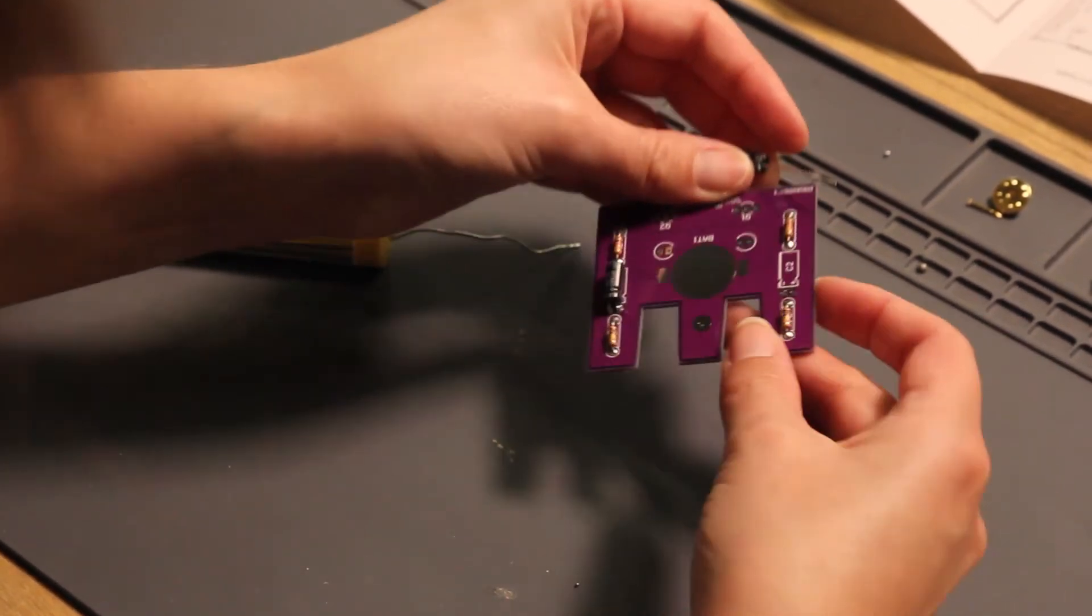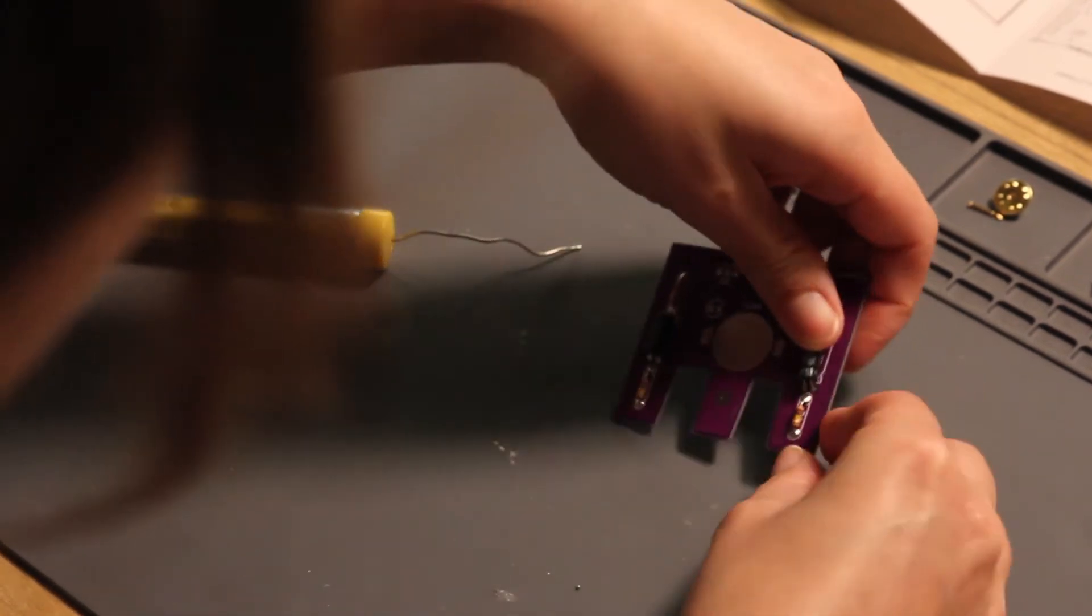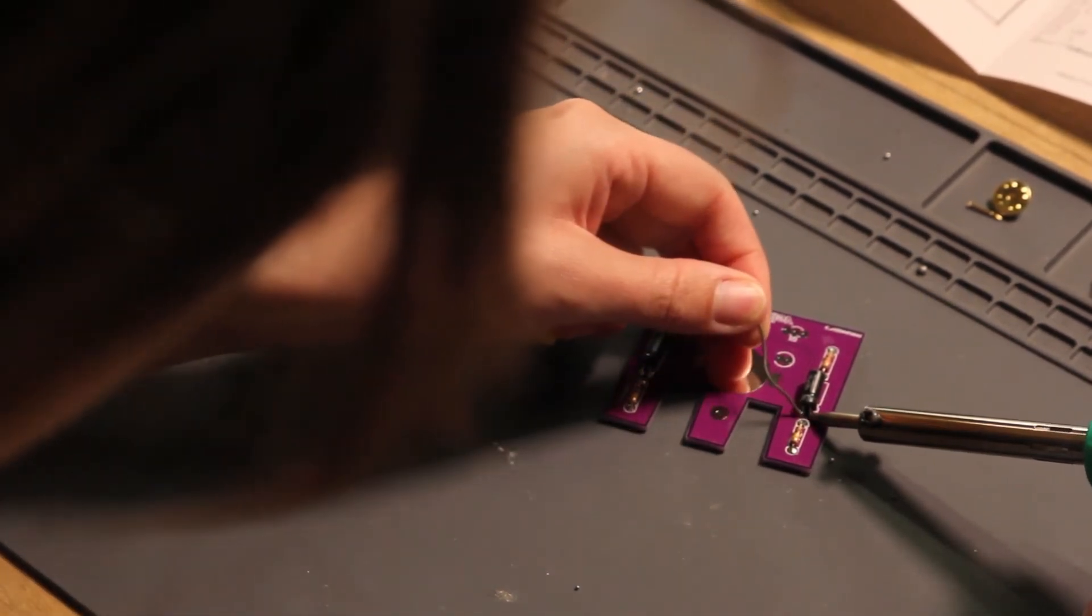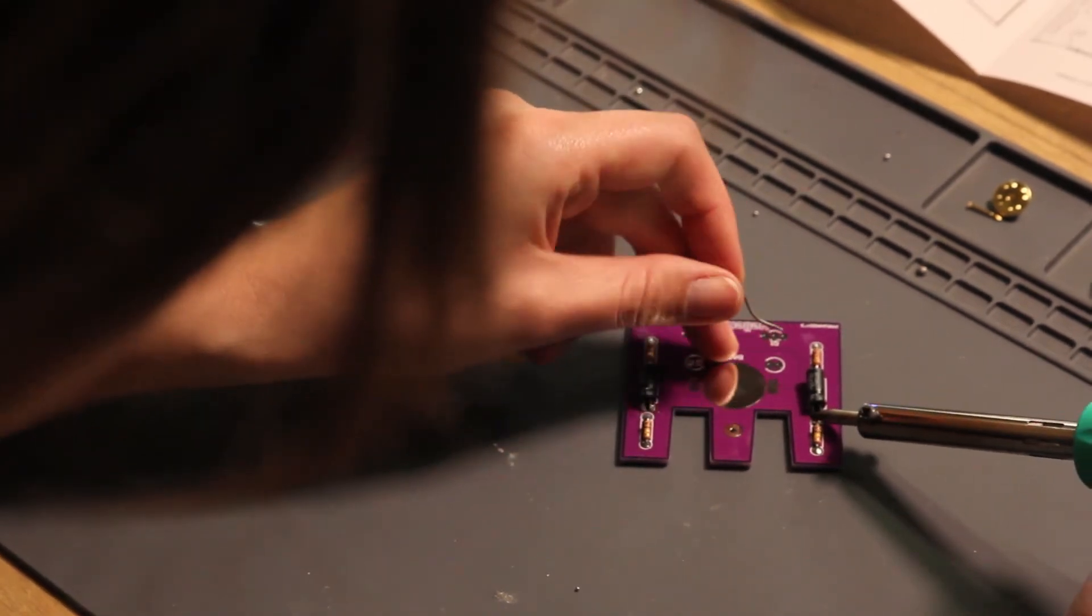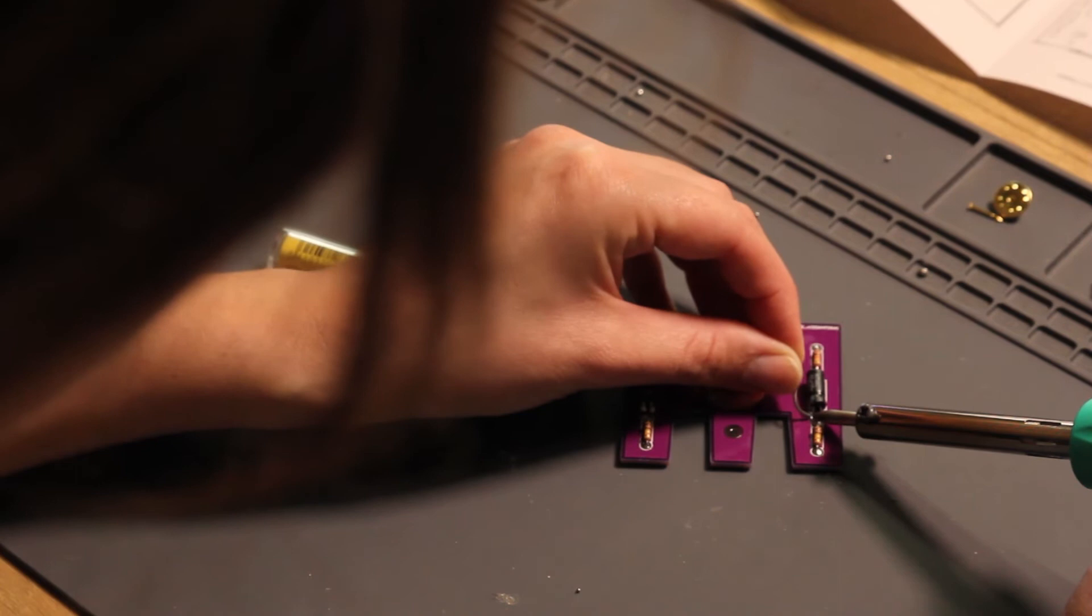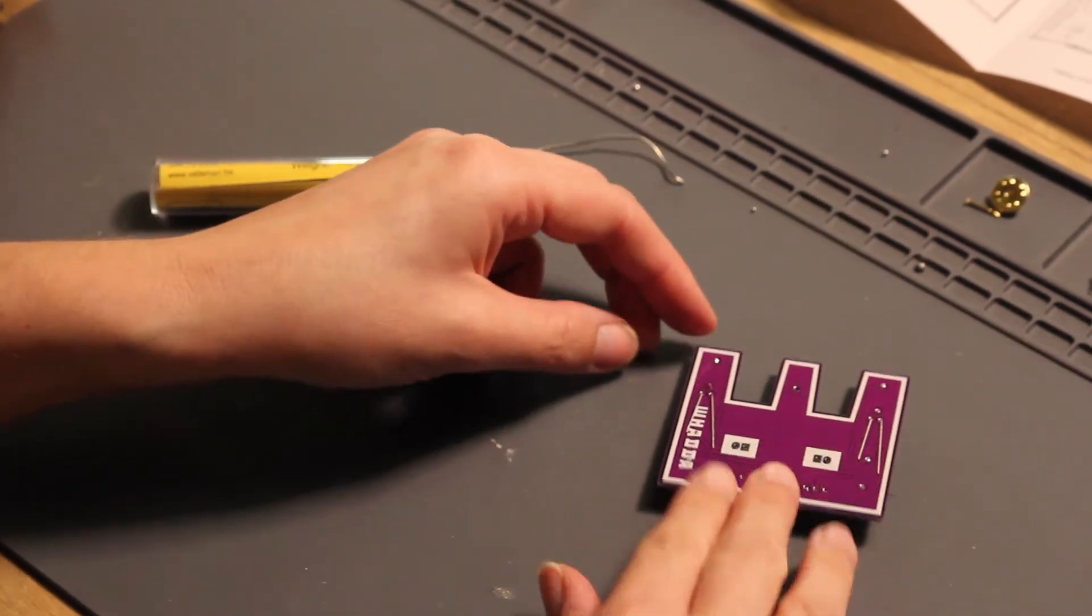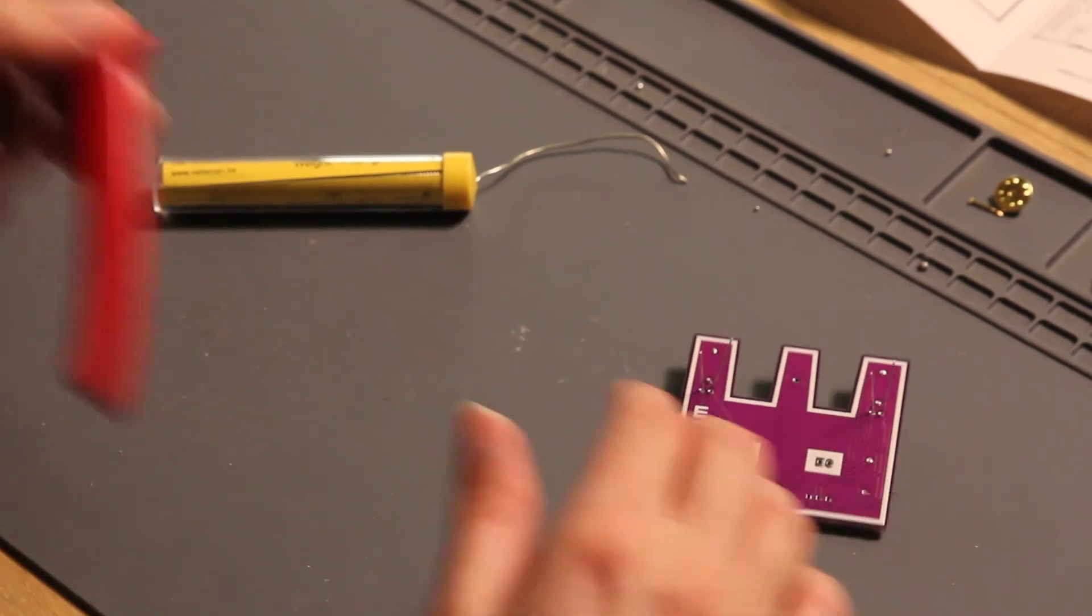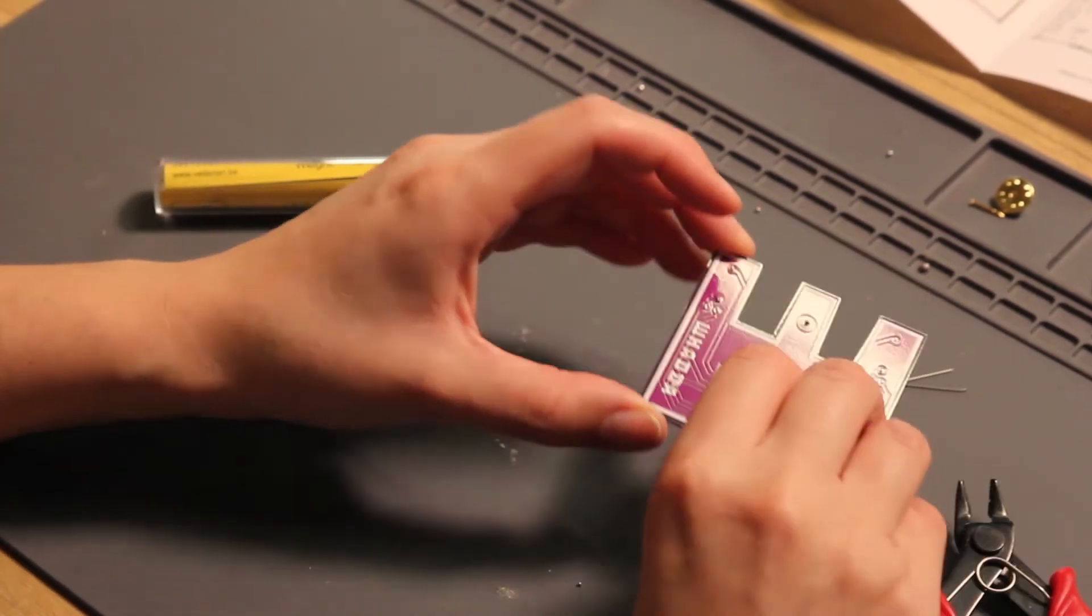Make sure that the connections do not touch each other. Now, do the same for the other one. Now, cut off the leads on the other side. And there we go.